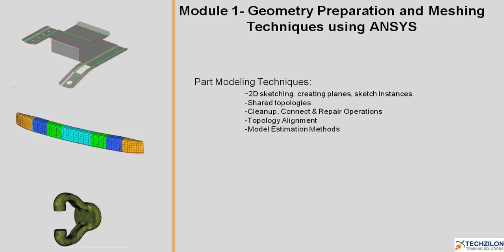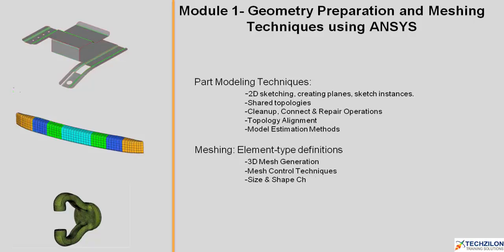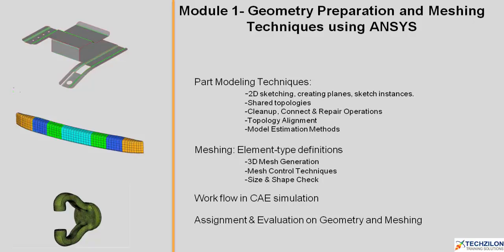We'll then move on to meshing and element type definitions, which will consist of 3D mesh generation, mesh control techniques, and size and shape check. You'll have workflow in CAE simulations, and at the end of the module you'll have assignments and evaluations on geometry and meshing.